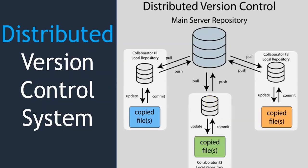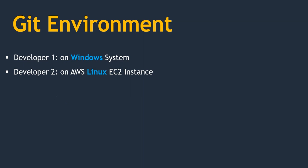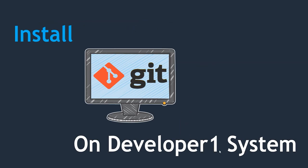That's all for this lecture — see you in the next video. Hello friends, welcome back. In the previous lecture we saw what a version control system is and the types available. We are going to use Git. In this lecture we'll see how to set up our Git environment. To demonstrate this course, I am going to use two users: developer 1 working on a Windows system — my laptop — and developer 2, which will be an Amazon Linux EC2 instance. This way you can understand how Git works on both Windows and Linux. Let's start by installing Git on developer 1's system.